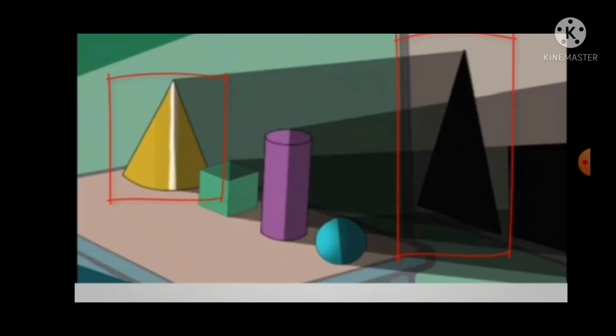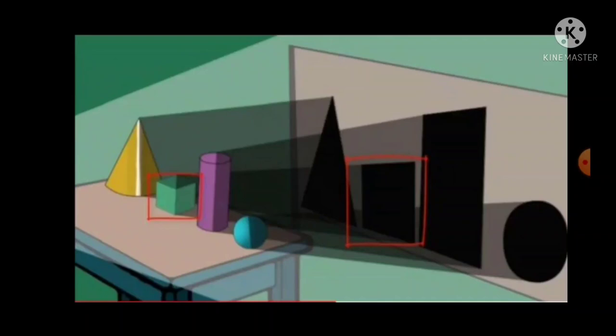Now see one by one. First one is cone. Its reflection, what we will get? Yes, it is triangle. So we know that triangle is the basic shape of cone. Yes, it is cube shape. Its reflection we will get square. So we know very well square is the basic shape of cube.